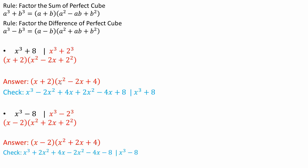Let's expand to verify. x times x² is x³. x times -2x is -2x². x times 4 is 4x. 2 times x² is 2x². 2 times -2x is -4x. And 2 times 4 is 8. So -2x² cancels with 2x², and 4x cancels with -4x, leaving us with x cubed plus 8.